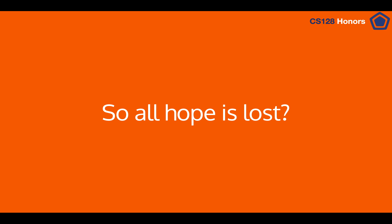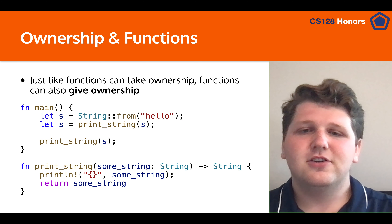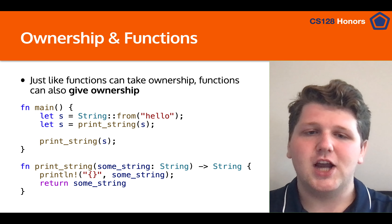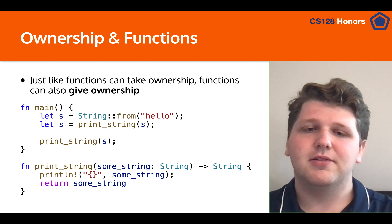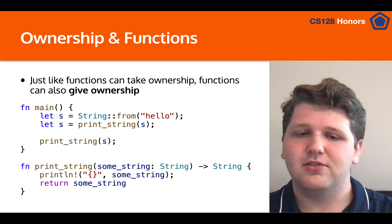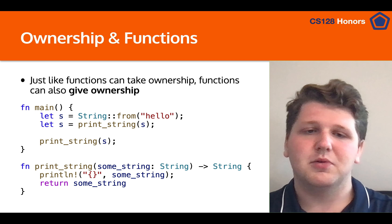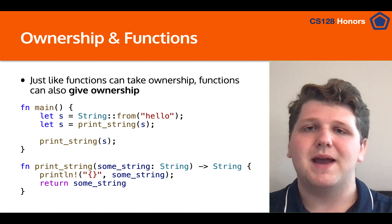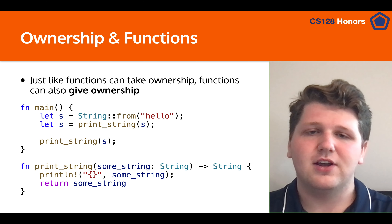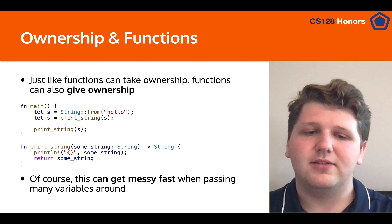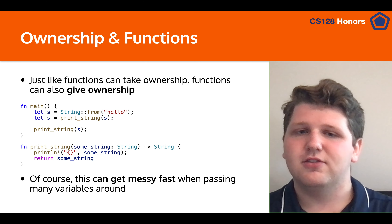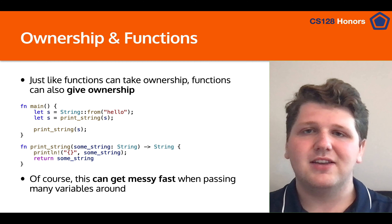So is all hope lost? No. There is a way to get around this — functions can give ownership just like they can take it. If we look at this example, we're using shadowing to set s to be the result of print_string(s), and inside print_string we return the string with its ownership once we're done. This looks just like the example before, but instead when the stack deallocates it gets moved back into s. One thing to note though is that this can get really messy really fast when passing many variables around — if you have a struct with 15 strings that you need to pass around, that's going to get very annoying.